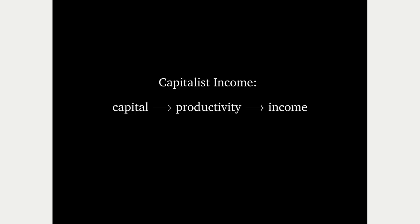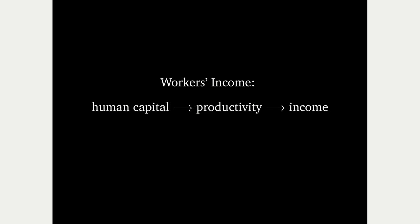Let's think about the causal chain. In neoclassical economics, capital is productive — capitalist income is explained by the productivity of their machinery and factories. What human capital theory does is say there's an equivalent form of capital in workers called human capital. Workers don't own property, but they have skills and knowledge that constitutes human capital, making them more productive and earning more income. It's the same causal chain as marginal productivity, extended to individual workers.